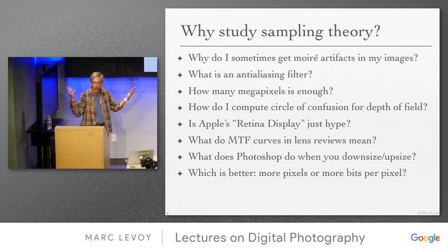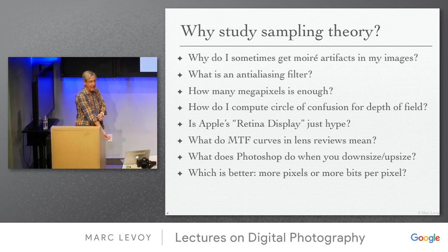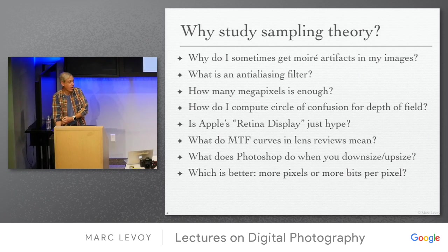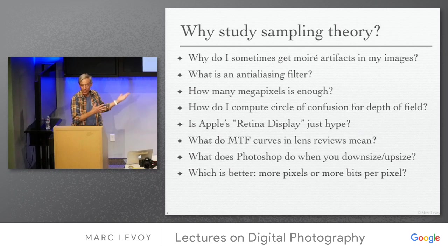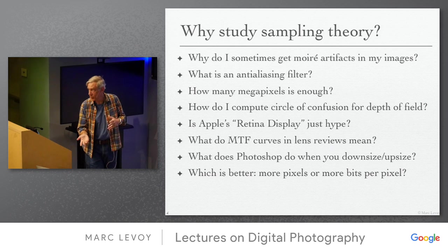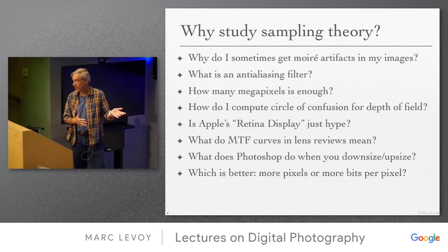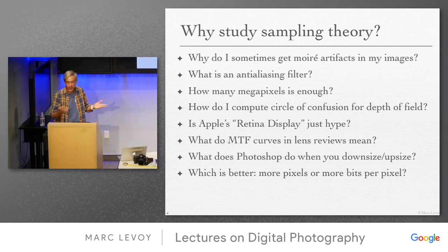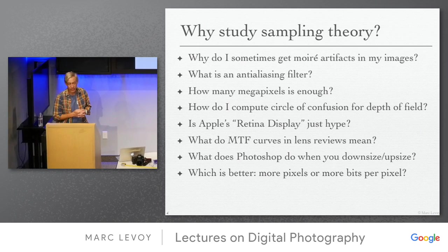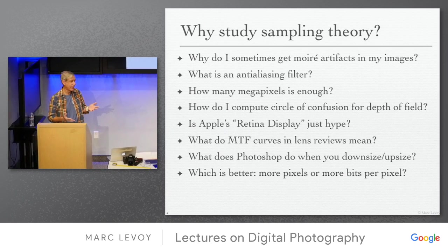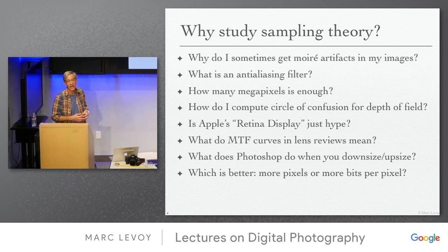The kinds of questions we're interested in answering from sampling theory applicable to photography include: What are the moiré artifacts in photographic images? What is an anti-aliasing filter? How many megapixels are enough — we can talk about that quantitatively. We can talk about retinal resolution, whether Apple's Retina display is just hype, the circle of confusion more precisely, the modulation transfer function curves, and what is actually done in Photoshop for upsizing and downsizing.